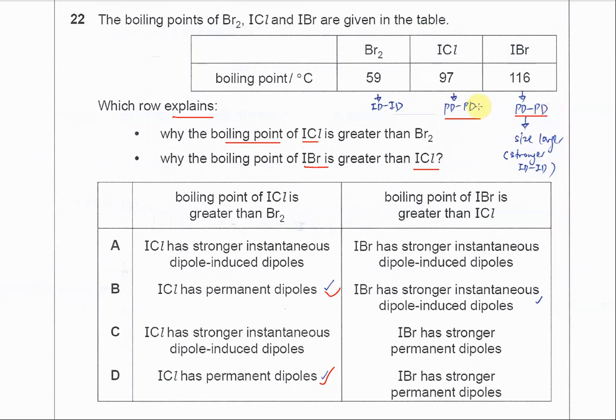So we know that bromine is larger than chlorine, so that means the size of IBr is larger than ICl. So the IBr has a stronger ID-ID because the IBr now has more electrons.